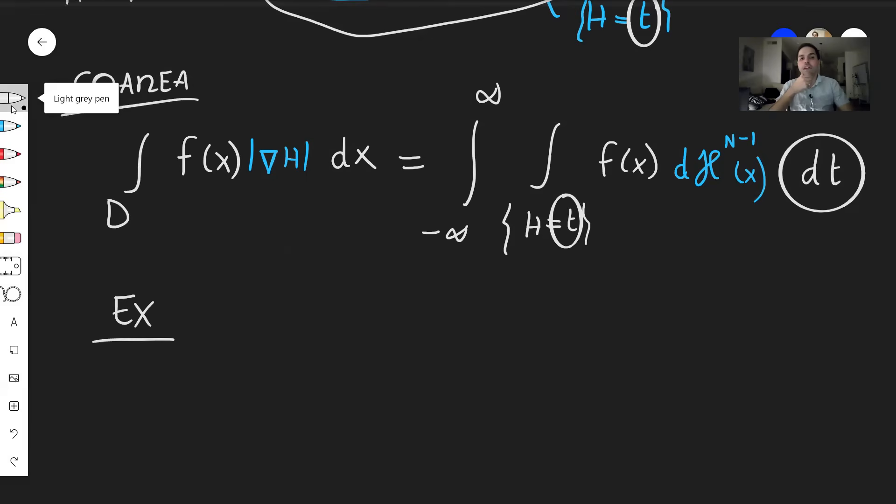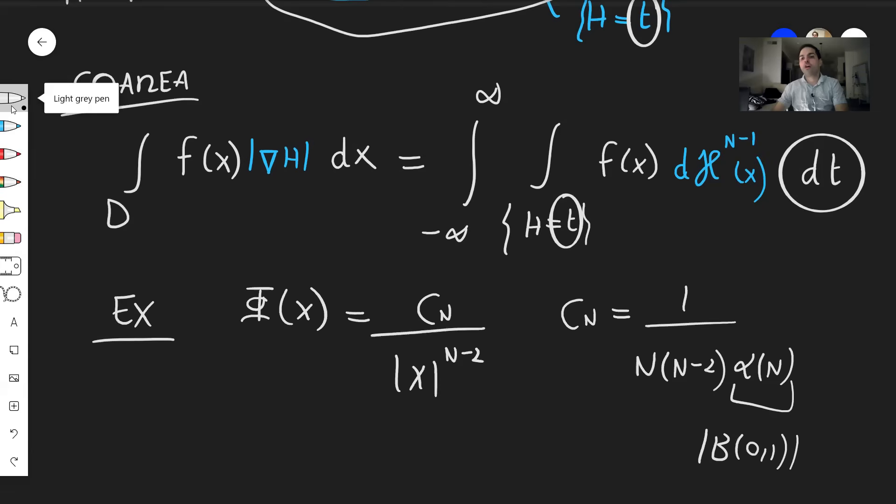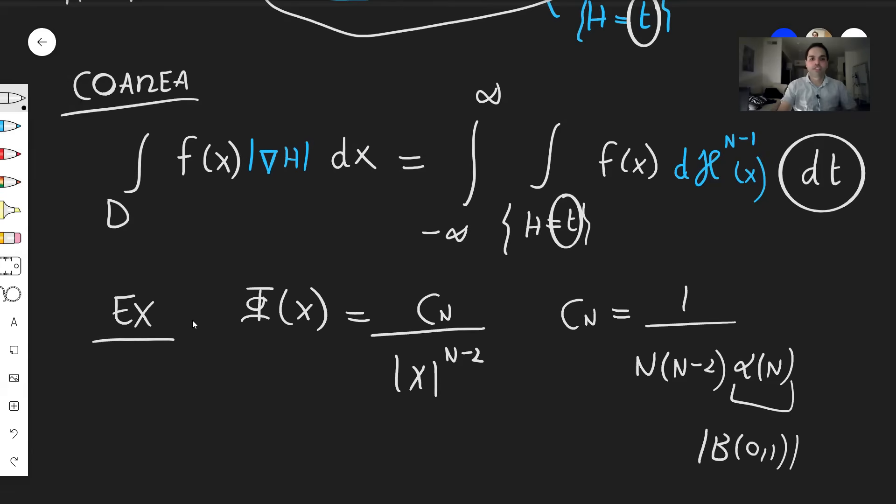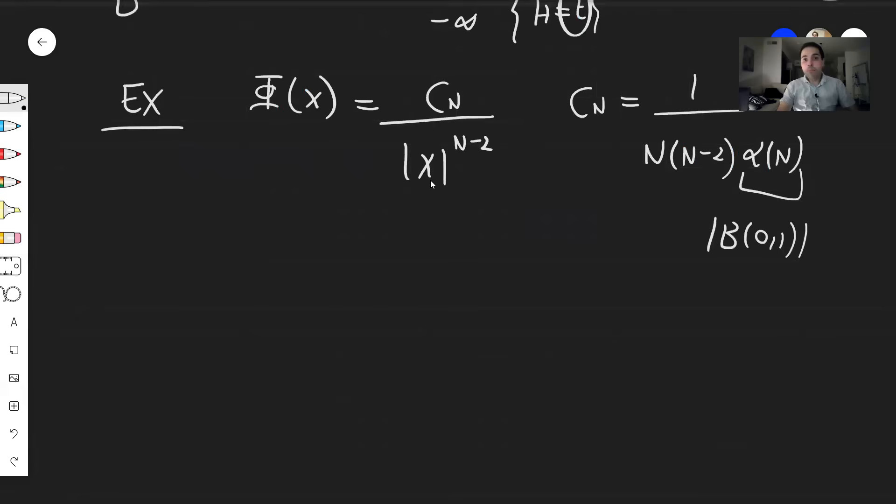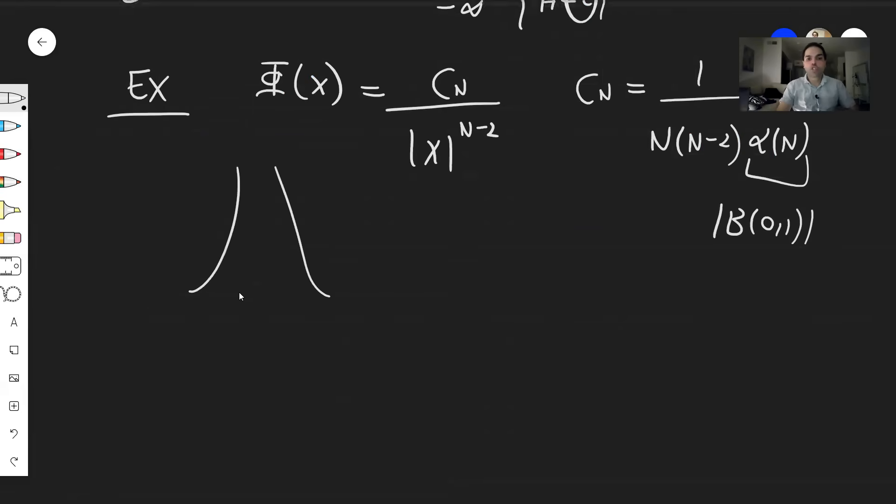So in PDEs, there's this thing called the fundamental solution of Laplace's equation, Φ(x), which is just a constant depending on the dimension, C_N, times 1 over |x|^(N-2), where this constant is given by 1 over N times (N-2) over α_N. Where α_N is just the volume of the ball of center zero and radius 1. And the problem is this function could blow up. So it kind of looks like this, yet what I want to show you is,